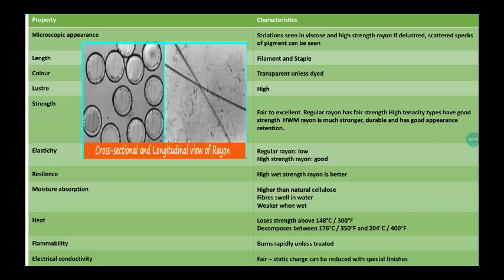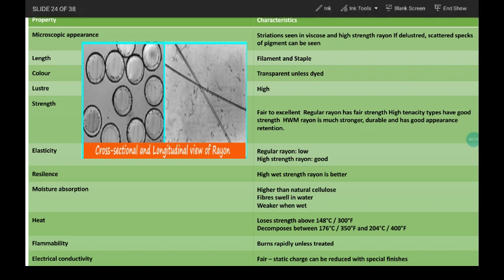So now just take a look at the properties of rayon fibers. When we look at its macroscopic structure, strength is seen in viscose and high strength rayon if delustered. Scattered specks of pigment can be seen there.